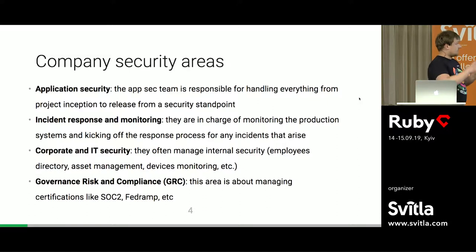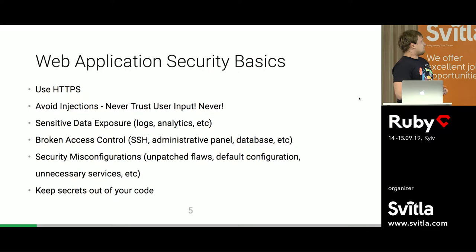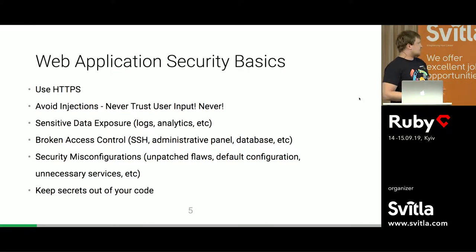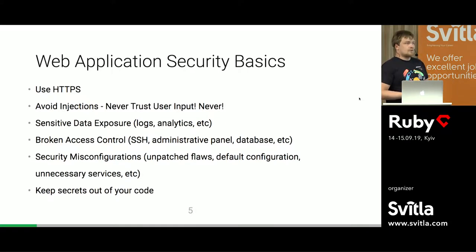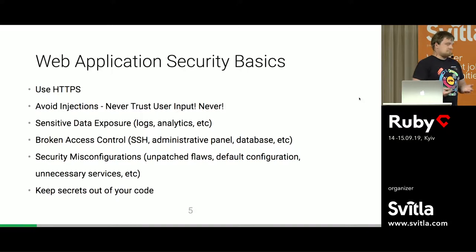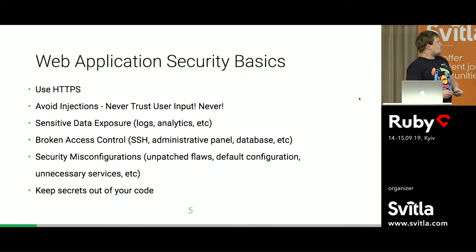Today I'll mostly talk about web application security basics, which I hope everybody understands. We should use HTTPS and encrypt our traffic. Avoid injections — never trust user input, like never. Sensitive data exposure is also a problem; sometimes somebody starts logging proxy variables and forgets to filter passwords or secret tokens. Broken access control, like using SSH with passwords, or leaving a database open to the world. Security misconfiguration — don't skip security patches — and keep secrets out of your code. Please don't commit your secrets to a repository.